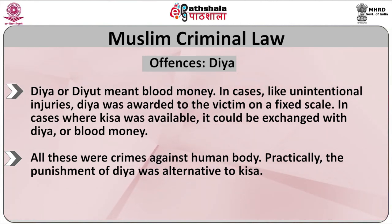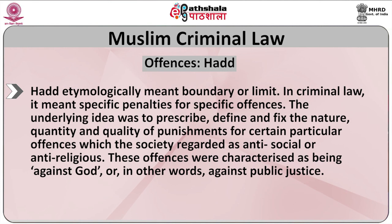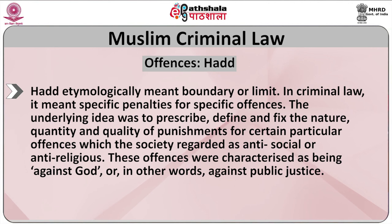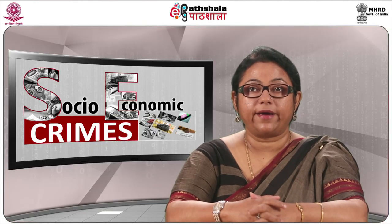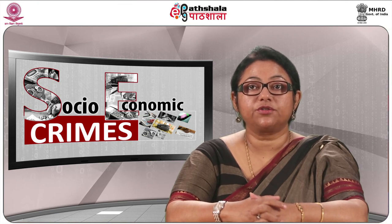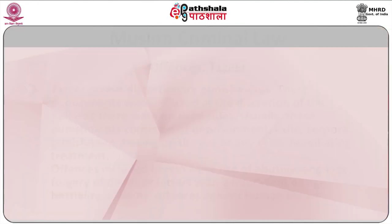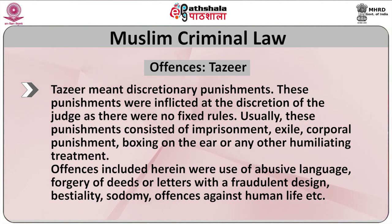Where Kisa was available, it could be exchanged with Diya or blood money. Practically, the punishment of Diya was alternative to Kisa. Had etymologically meant boundary or limit. In criminal law it meant specific penalties for specific offenses. The underlying idea was to prescribe, define, and fix the nature, quantity, and quality of punishments for certain particular offenses which society regarded as anti-social or anti-religious. These offenses were characterized as being against God, or in other words against public justice. Some of the Had punishments were death by stoning, amputation of a limb or limbs, and flogging.